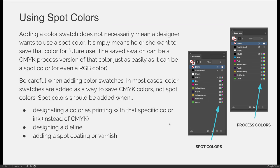Adding a color swatch does not necessarily mean a designer wants to use a spot color. It simply means he or she will want to save that color for future use. The saved swatch can be a CMYK process version of that color just as easily as it can be a spot color. It could even be a lab or an RGB color. What's important is that you're identifying your swatches as the colors and color modes you want — spot color or process color.